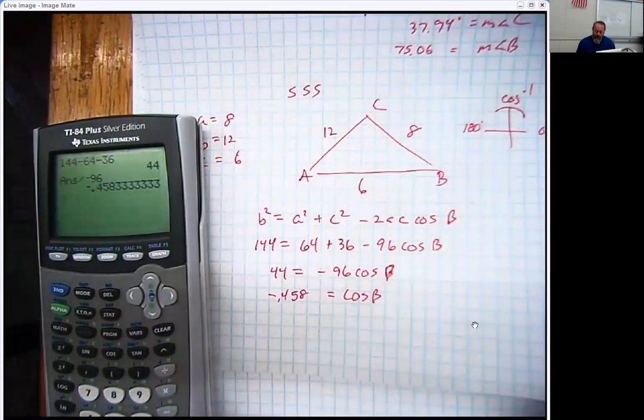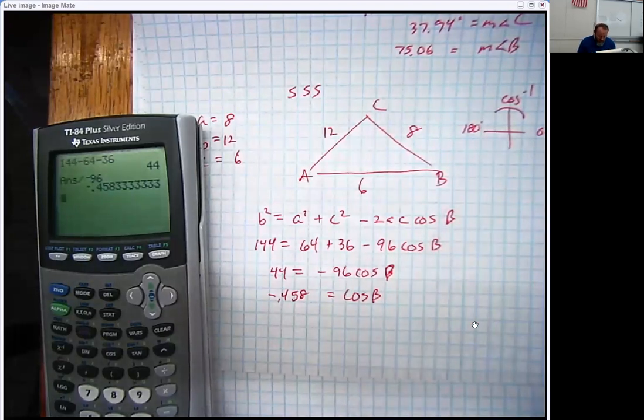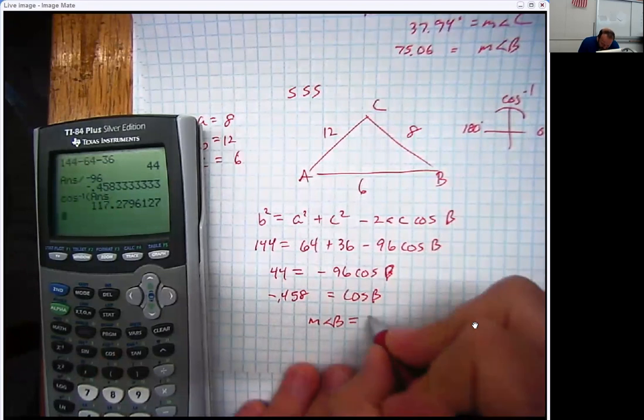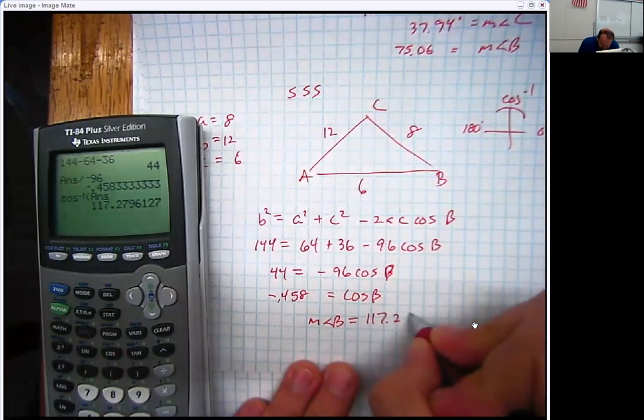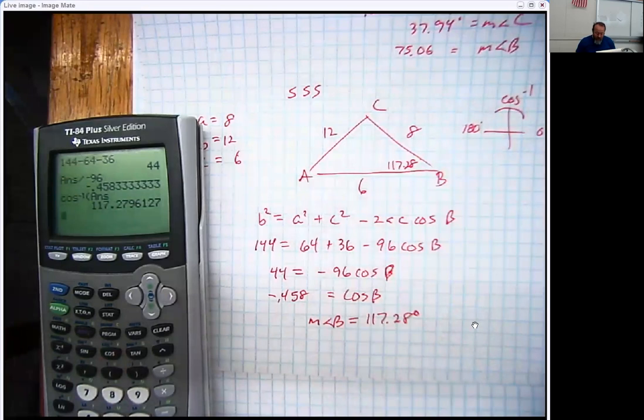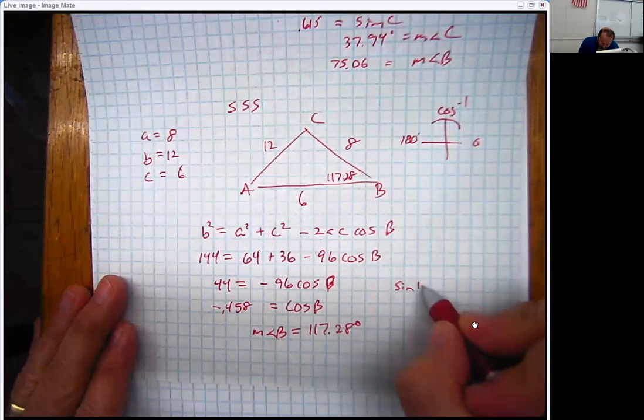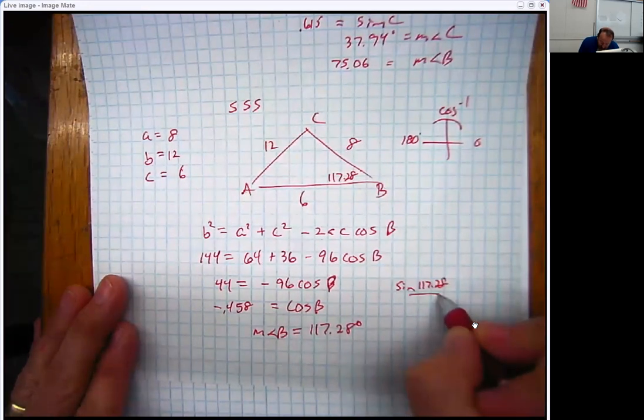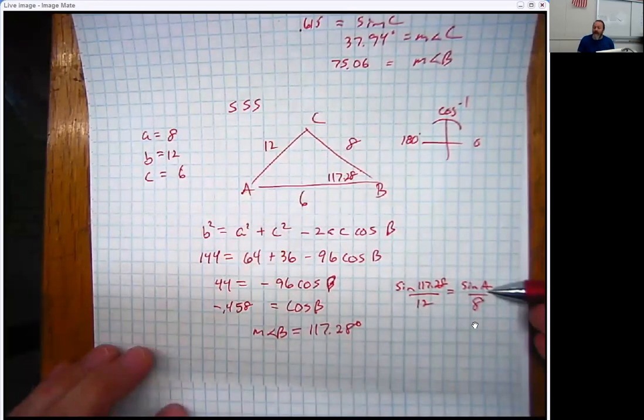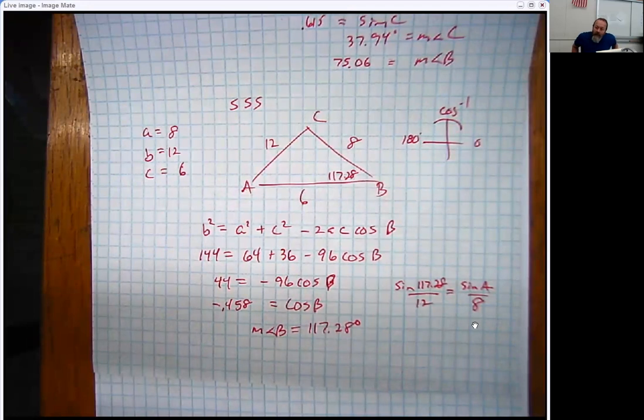Hey, by the way, if the cosine is negative, it cannot be in the first quadrant. It has to be in the second. So I know for a fact, this is obtuse. So if I take the inverse cosine, I can find that the measure of angle B is 117.28 degrees. Now, I'm actually not going to finish this problem. But clearly, we could now use the law of sines. I'm just going to set one of them up. We can say the sine of 117.28 over 12 maybe would be equal to the sine of A over 8. And I don't need to worry about A being obtuse because we already had one. I already did the biggest one. So it's not possible to have another obtuse angle.